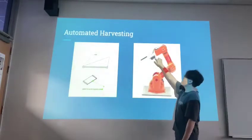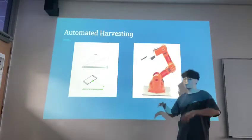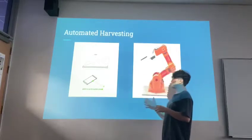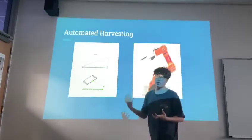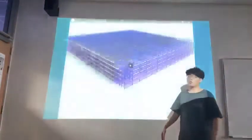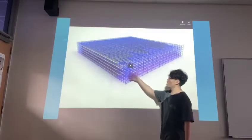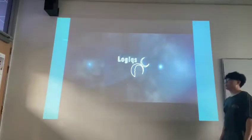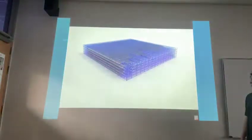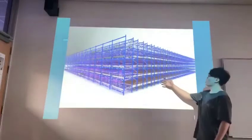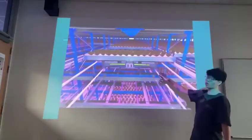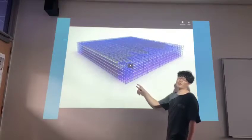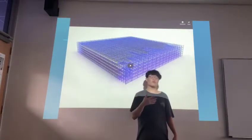We went for automated harvesting. This robot will be placed at the ready-to-harvest point. The sliders — as you can see — when the vegetables are big and ready to be harvested, they will slide to the point where the robot picks up the vegetables and puts them inside the vending machine for consumers to buy. This video shows how our slider will work. You can see the vegetables will slide to the point when they are ready to be harvested. I'll now pass it to my groupmate Sean, who will be talking about the exterior part of the Sky Farm.